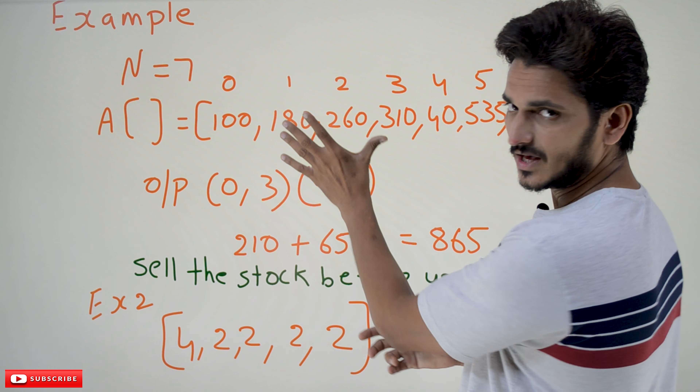Let's understand: when you buy the stock on day one at 100, the next days go 180, 260, 310, then the next day drops to 40 — that's why we sell here. This is one segment where we get maximum profit. You buy at 100 and sell at 310, so the profit is 310 minus 100, which equals 210.